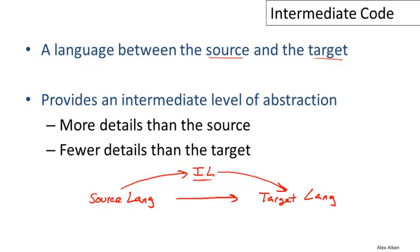In particular, the intermediate language might have more details in it than the source language. For example, if we want to optimize register usage, a source language like Cool has no notion of registers at the source level. So there's no way to even express the kinds of optimizations you might want to do with registers. An intermediate language that exposes that level of detail — that at least has registers in it — would allow you to write algorithms that could try to improve the use of registers in the program.